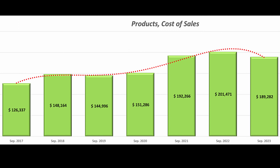The cost of sales for products is experiencing a slight decrease of approximately 6.1%. This indicates potential improvements in cost management or operational efficiencies within the production process, with the potential to positively impact the overall cost structure.